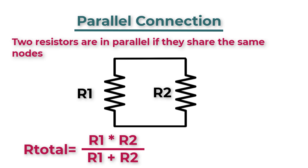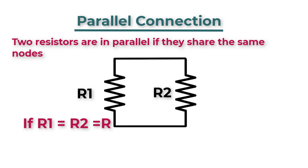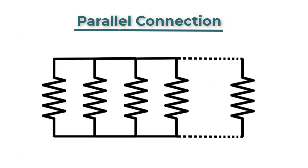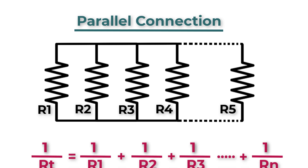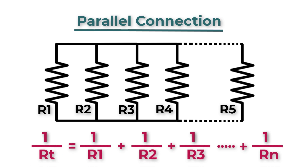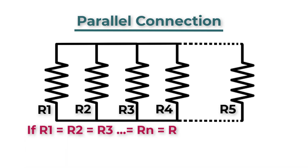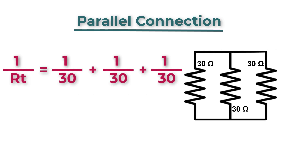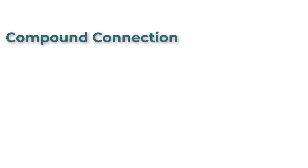To calculate the total resistance for two parallel resistances, follow this formula: R_total equals R1 times R2 over R1 plus R2. If they have the same resistance value, in the case of more than two parallel resistances, use the general formula: 1/R_total equals 1/R1 plus 1/R2 plus 1/R3 and so on. If the resistors have the same value, just divide R by the number of resistors. For example, with three 30-ohm resistors in parallel: R_total equals 30 over 3, which equals 10 ohms.